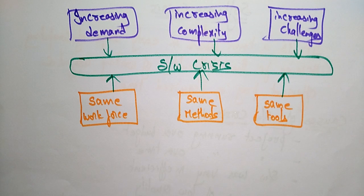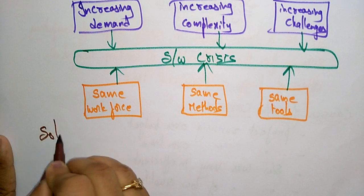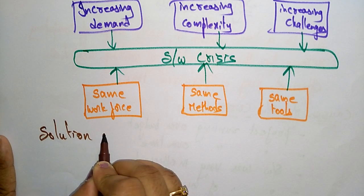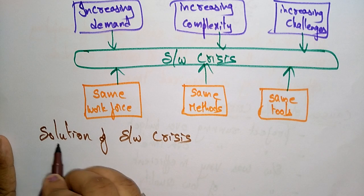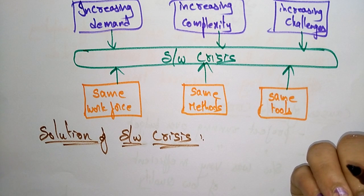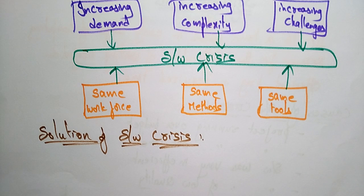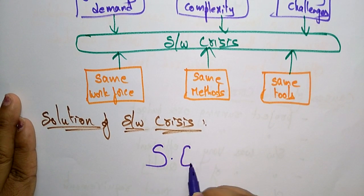For these reasons, software crisis keeps increasing. So what is the solution for software crisis? The solution is software engineering. Demands are increasing, complexity is increasing, challenges are increasing, but if you are using only the same methods and same tools, how can you overcome this software crisis? The main solution is software engineering.